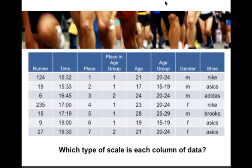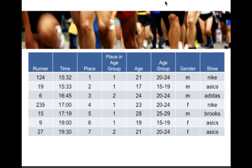Let's go back to our 5K race data and determine which type of scale each column represents. Starting with time — we know the relative difference between runners, and there is a true zero, zero minutes — so time is a ratio variable. When we look at place of finish or place in age group, we don't know the relative difference between any two finishers; we only know the order they finished. So place is an ordinal variable — we know first is before second, but not how much time separates them.